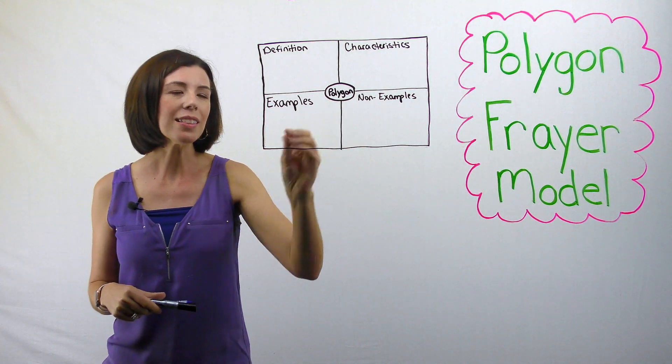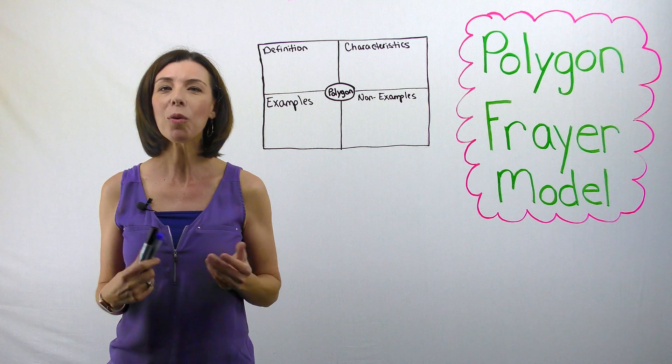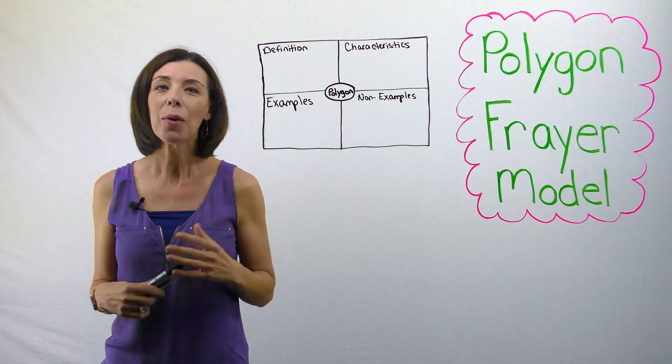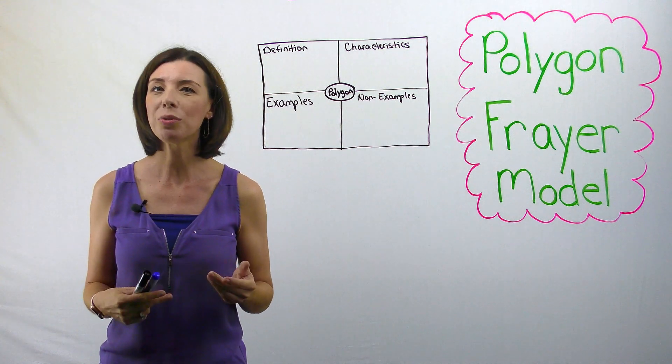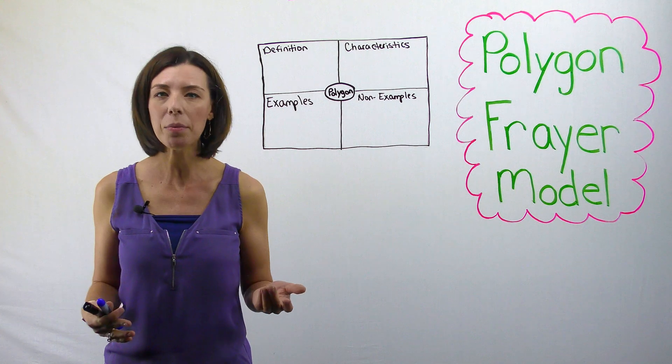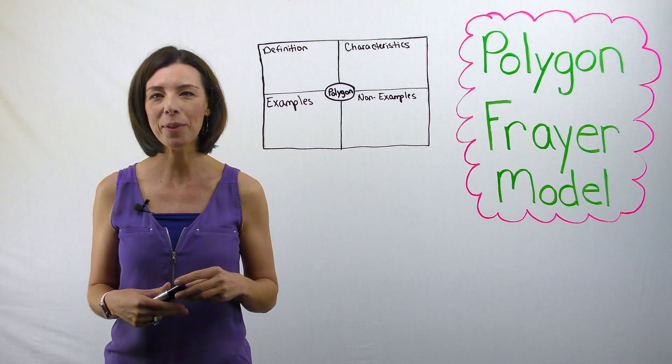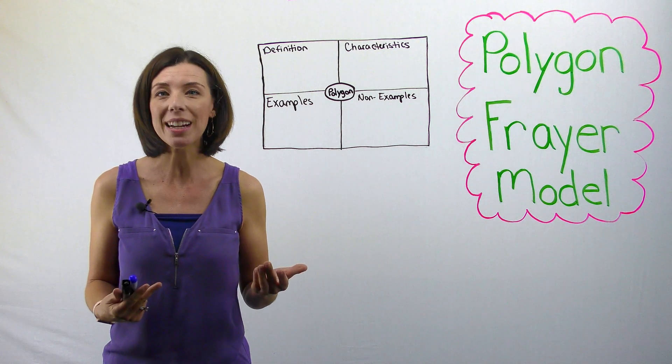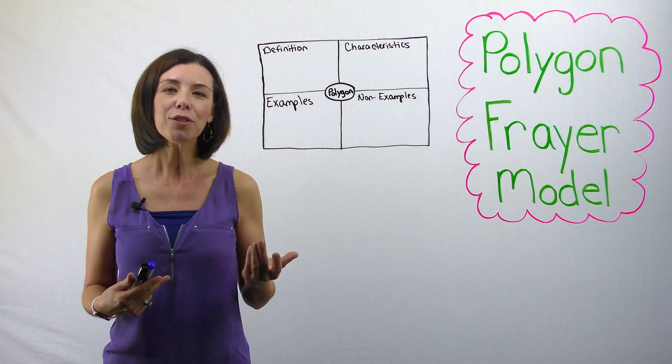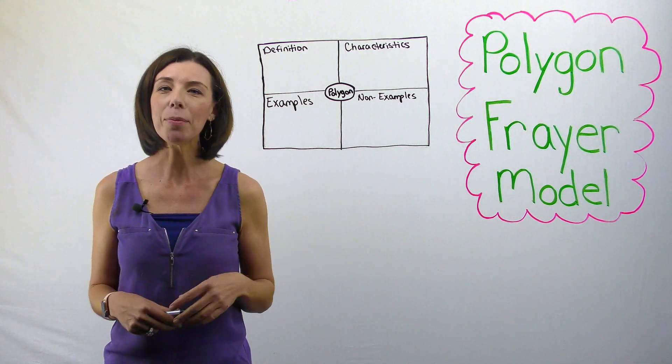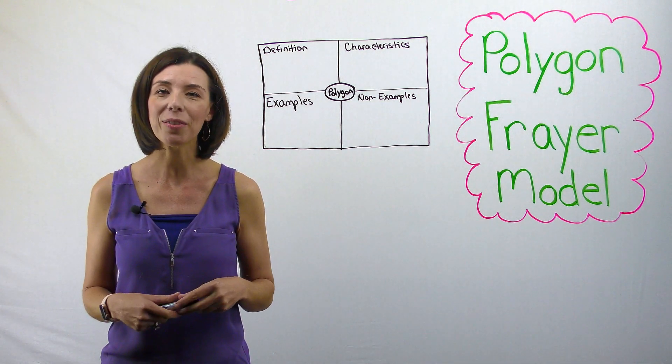In the middle, you'll see that I've written the word polygon, and we're going to be using this technique to explore what a polygon means. When we teach children new vocabulary words, we have a tendency to just give them the word and the definition. There's only one problem with that. They're going to have a harder time remembering a regurgitated definition that you give them versus the definition that they come up with on their own. We're going to use the Fryer model to help them come up with these definitions on their own.